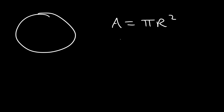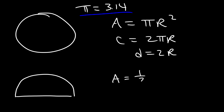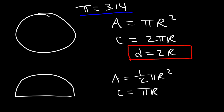For a circle, the area is pi r squared, and its circumference is 2 pi r. Keep in mind the diameter is 2r. Pi, rounded, is 3.14. For a semicircle, everything is half: the area is 1/2 pi r squared, and the circumference is just pi r. But the diameter is still 2r. So that's a recap of the formulas used in this video — make sure you know those formulas if you have a test on this.